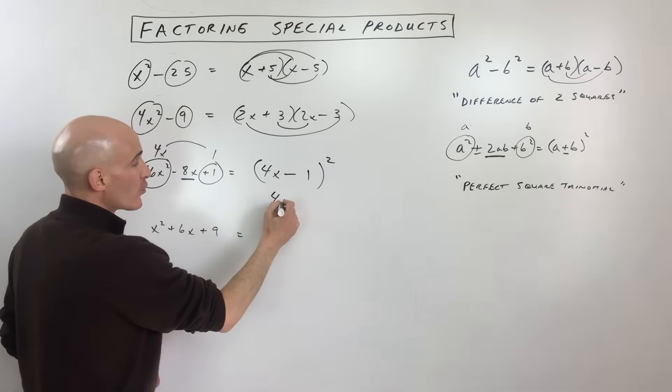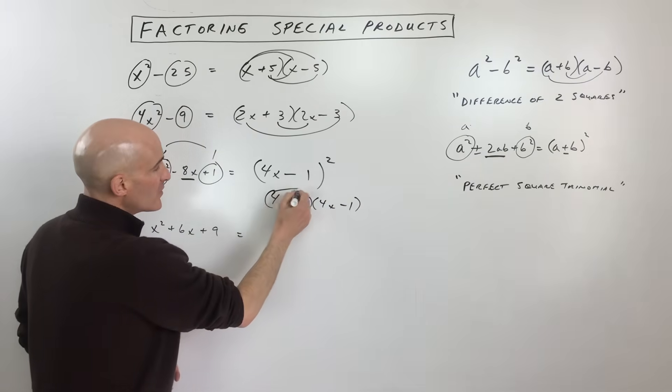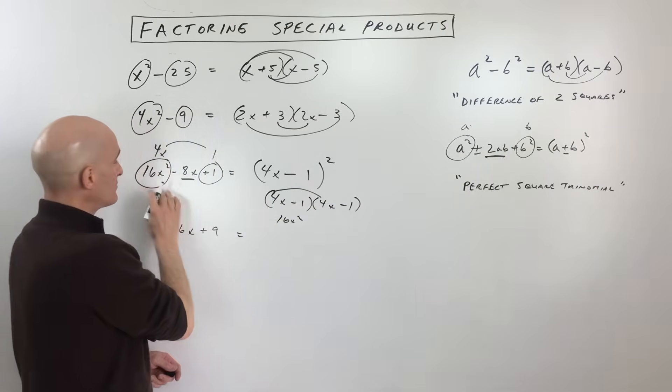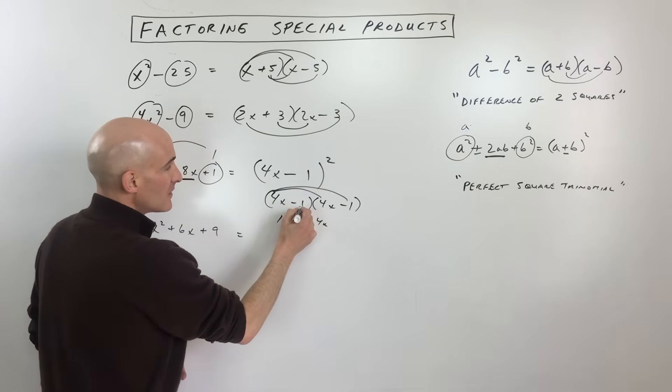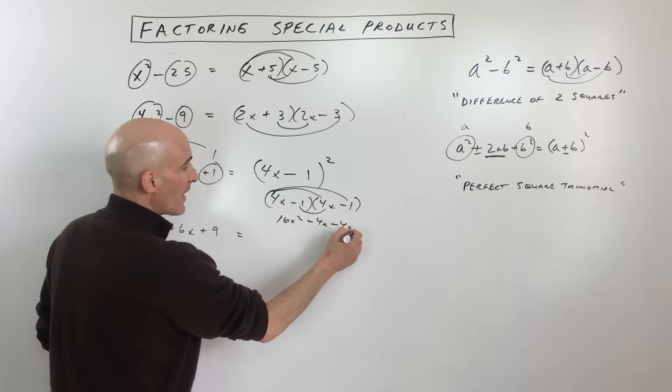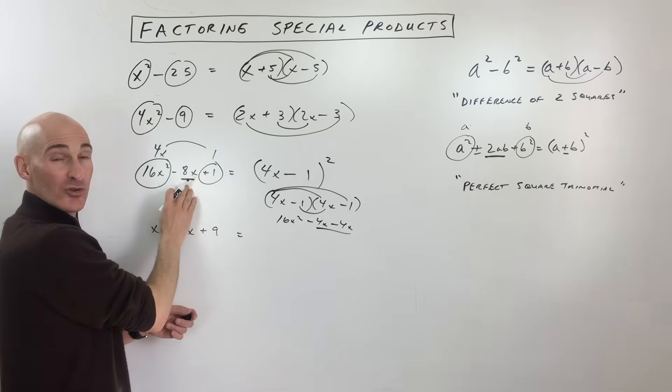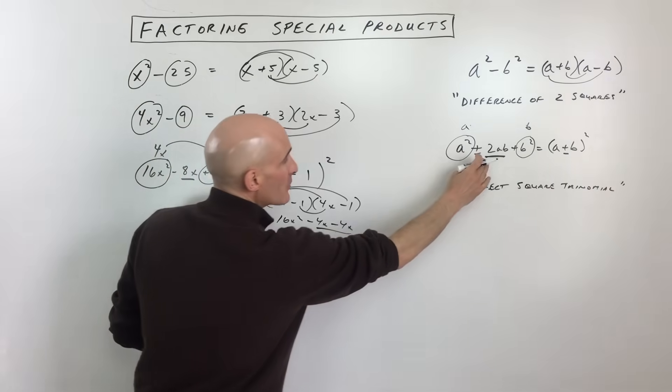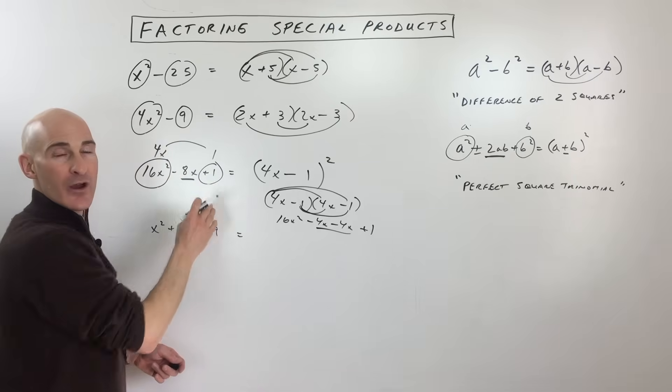If you want to check your work, it's good to do this to see why it works. When we distribute (4x - 1)², we get 16x², then negative 4x and another negative 4x which adds up to negative 8x. That's why 4x times 1 doubled is 8x, the middle term or the 2ab term. Negative 1 times negative 1 is positive 1.